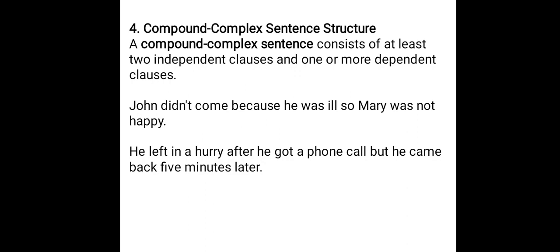The fourth and last type is compound-complex sentence structure. A compound-complex sentence consists of at least two independent clauses and one or more dependent clauses. It is a mixture of compound and complex sentences. Example: 'John didn't come because he was ill, so Mary was not happy.' Here 'John didn't come' and 'Mary was not happy' are the two independent clauses, and 'because he was ill' is the dependent clause. So it is a compound-complex sentence.